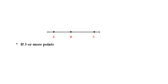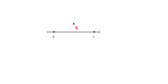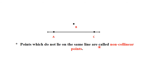If three or more points lie on the same straight line, they are called collinear points. Here we have three points — A, B, and C — all lying in a straight line, so they are collinear points. But if any point is outside the line, then those points are called non-collinear points. Points which do not lie on the same line are called non-collinear points.